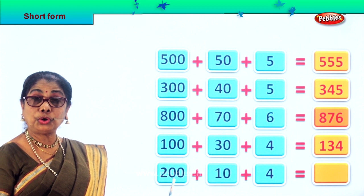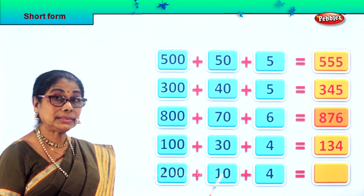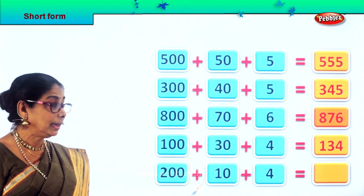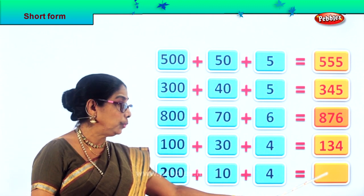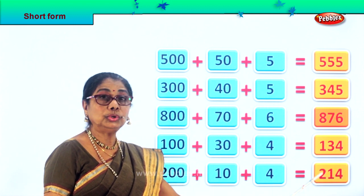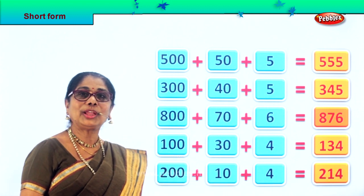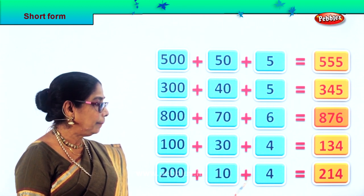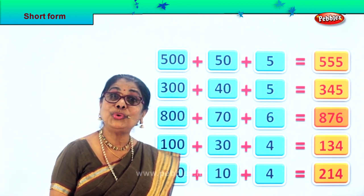Let's do the short form for 200 plus 10 plus 4. What is 200 plus 10 plus 4 equal to? When you shorten, 200 plus 10 plus 4 becomes 214.